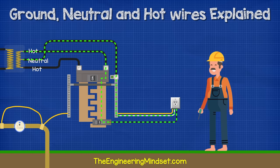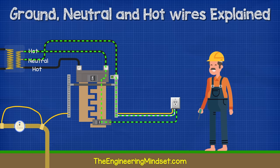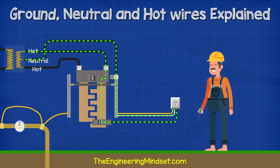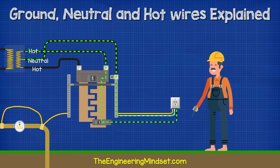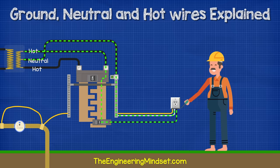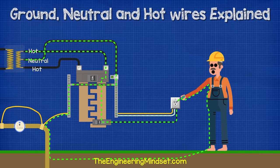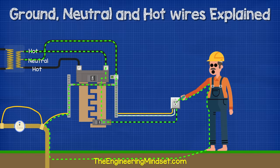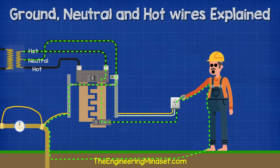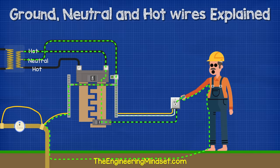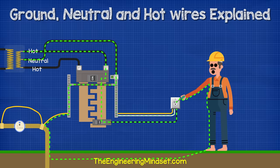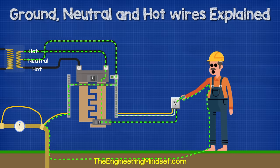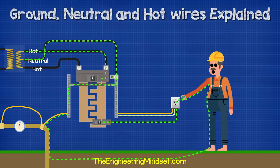Now let's say you're outside with no shoes on and the ground or soil is moist. If you touch a hot wire, you could complete the circuit and current may pass through you to get back to the supply. In this case the resistance is going to be very high, so the current might not be high enough to automatically flip the breaker and cut the power — which will likely lead to the person's death.